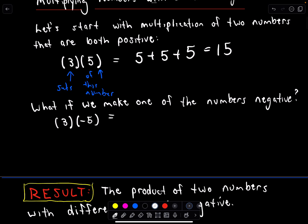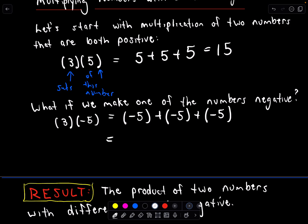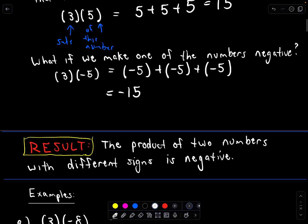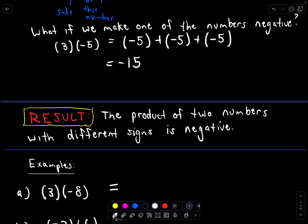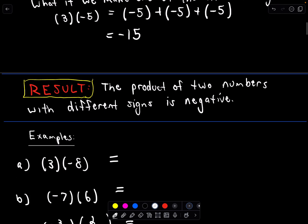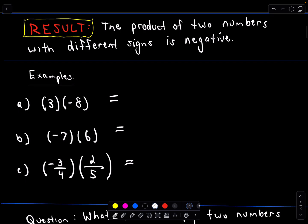Let's think about positive three times negative five. Again, we're just going to repeat the addition — I've got three copies of negative five that I'm adding together. A negative and a negative and a negative, if we add them all together, that's going to give me negative 15. That suggests that the product of two numbers with different signs is negative. So you can have a positive times a negative or a negative times a positive — it does not matter.